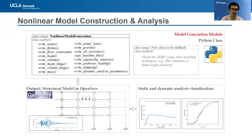The nonlinear model construction module provides a set of static methods to write the text files, which are further used to generate the nonlinear structure models in OpenSees. The models could be used for eigenvalue, static pushover, and dynamic analysis. Additionally, this module also provides a set of independent functions to visualize the analysis results.